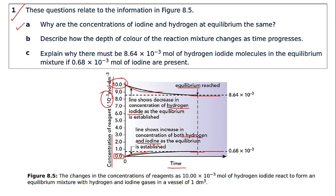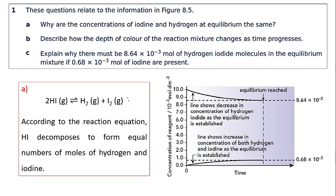Part (a): Why is the concentration of iodine and hydrogen at equilibrium the same? Looking at the graph, hydrogen and iodine are both products. We write the balanced chemical equation: 2HI → H₂ + I₂. Two moles of hydrogen iodide give one mole of hydrogen and one mole of iodine. Since the moles of hydrogen and iodine are equal, their concentrations at equilibrium will also be the same.